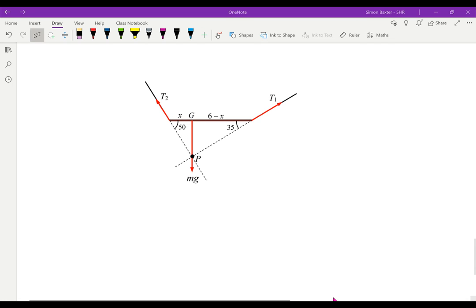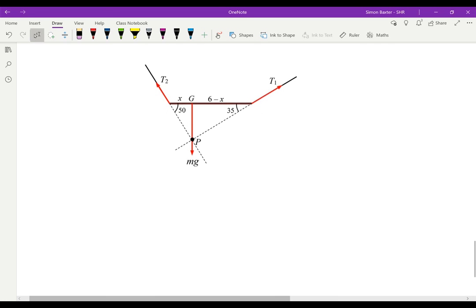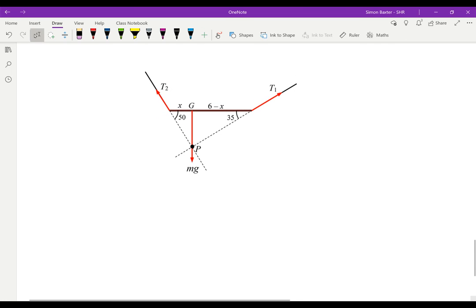So there is a picture of what's going on with those three forces all now shown to be going through the same point P. I've called the distance x from the end of the rod, the left-hand end as we are looking at it. The rod was of length six meters, therefore that length is six minus x.